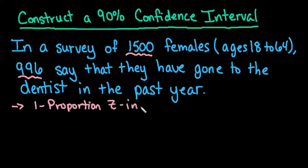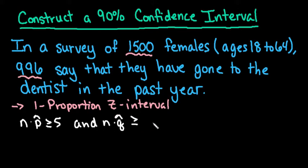This is the name of the interval we are going to be constructing. There are a couple of conditions that have to be met in order for the central limit theorem to kick in. The biggest one is that n times p̂ has to be greater than or equal to five and n times q̂ also has to be greater than or equal to five.